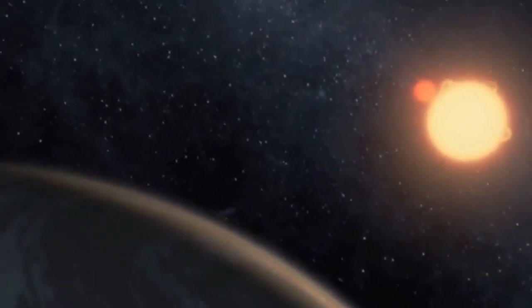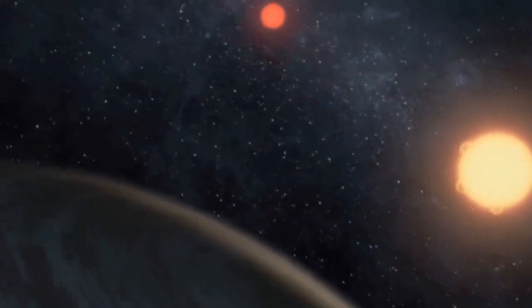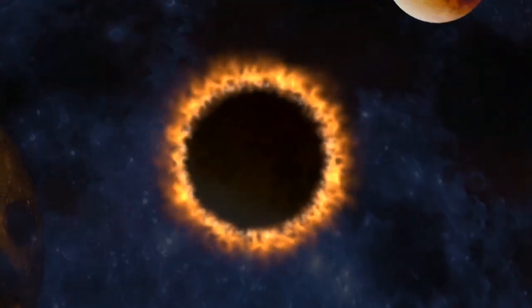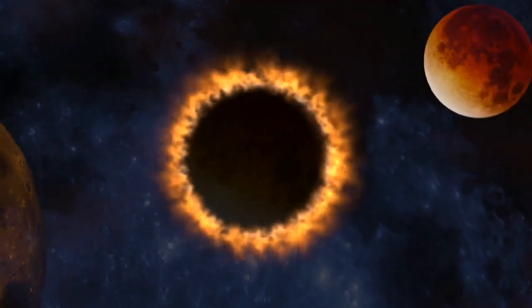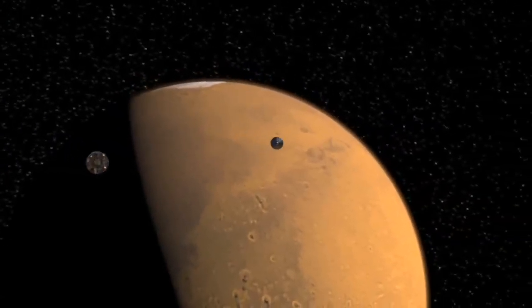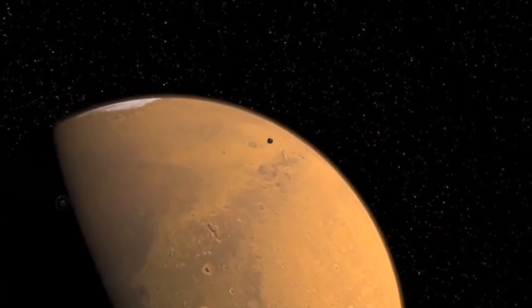GJ357D is located within the outer edge of its star's habitable zone, where it receives about the same amount of stellar energy from its star as Mars does from the Sun. And we know that Mars is the most promising planet where living things might survive.